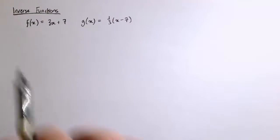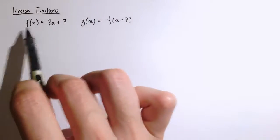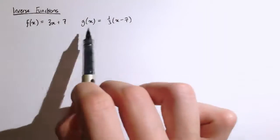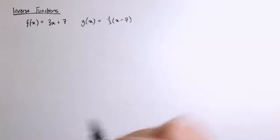So I've got two functions here, f and g, defined by these rules: f of x equals 3x plus 7 and g of x equals 1 third x minus 7.